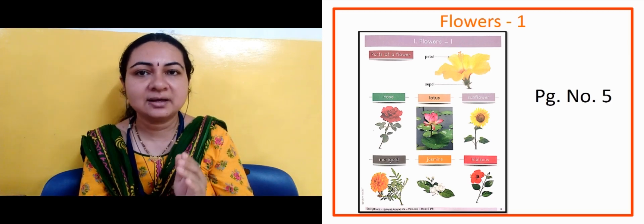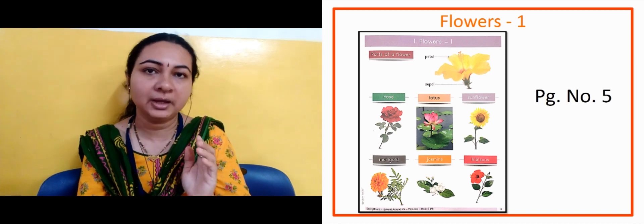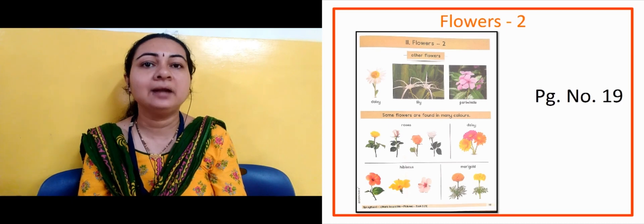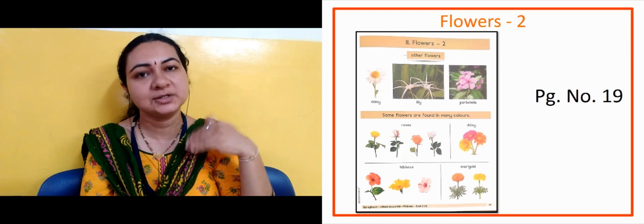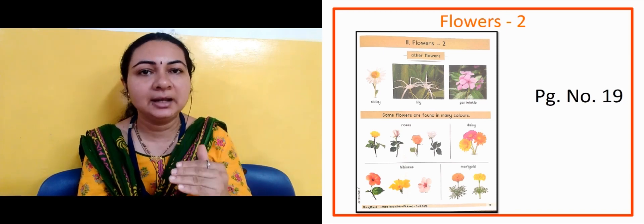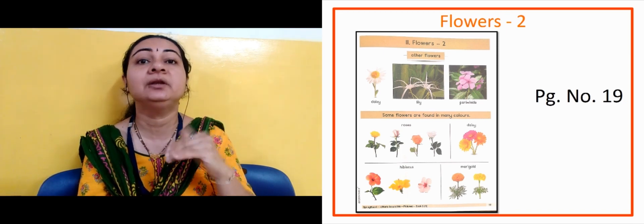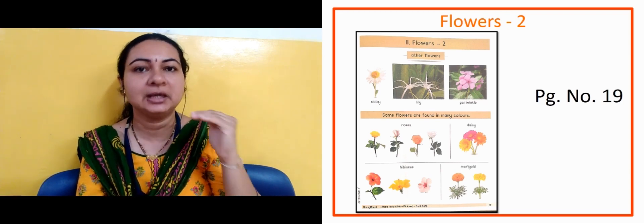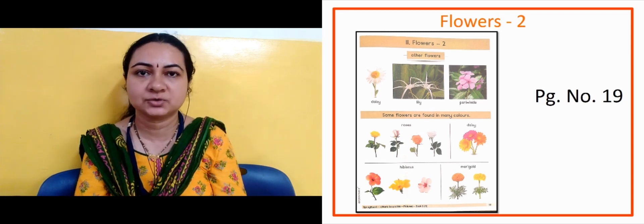Sunflower, hibiscus, jasmine and marigold. Now the next slide is Flowers 2. Just open your page number 19. In that we saw some different flowers, for example daisy, lily, periwinkle. And below that we saw flowers with different colors, for example rose, marigold, daisy, hibiscus — we see these flowers in different colors too.